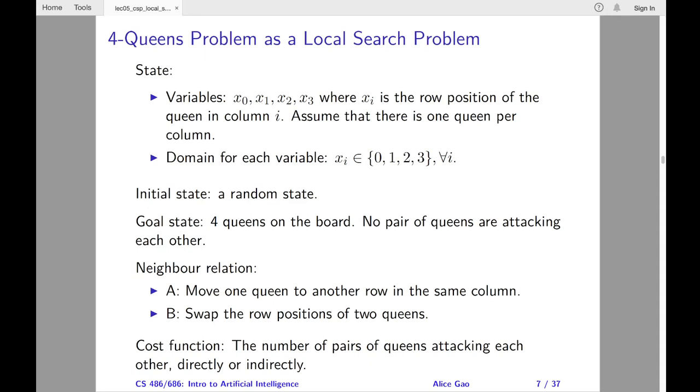How can two queens attack each other directly or indirectly? Well, two queens directly attack each other if they are in the same row or diagonal, and there is no other queen between them.